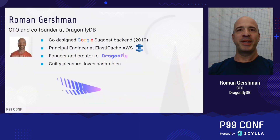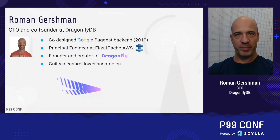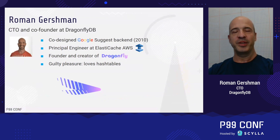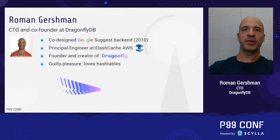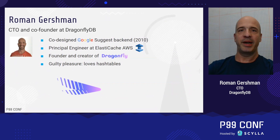Hello, thank you for coming to my talk. Big thanks to the organizers for inviting me to speak at this conference. My name is Roman Gershman and I am the creator of the Dragonfly project. Before working on Dragonfly, I was a principal engineer at the AWS ElastiCache team, and before that I worked at Google and was one of the architects behind the Google Suggest service.